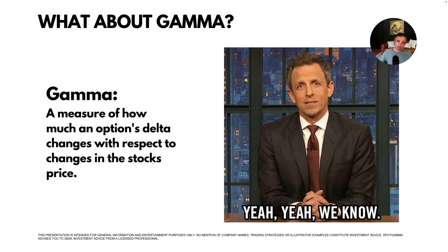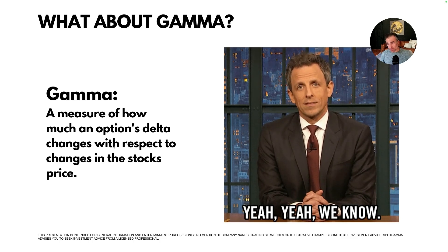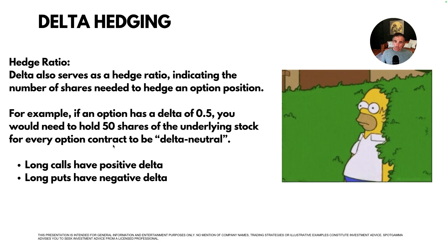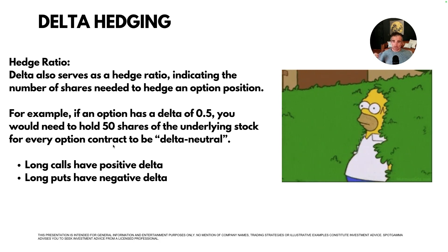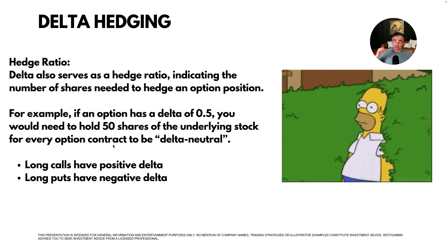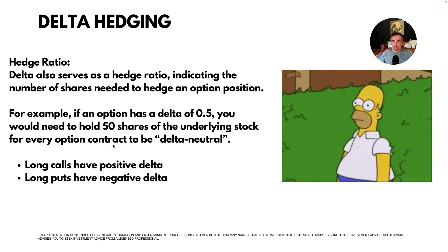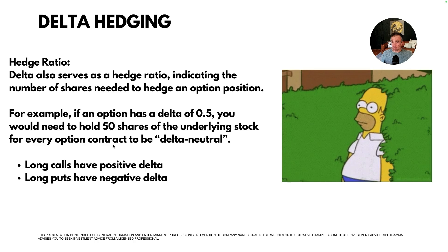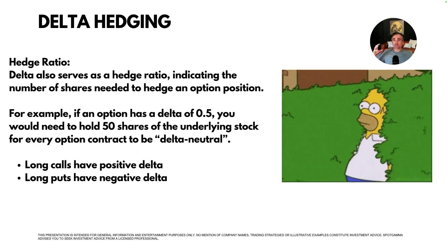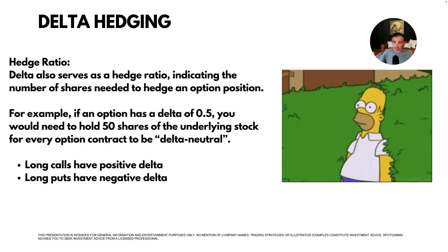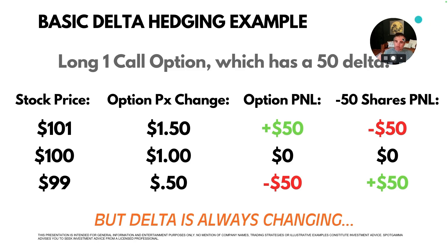We left out Gamma here. Gamma has been covered extensively across the internet — if you go to spotgamma.com and look up Gamma, there are excellent presentations on exactly what that Greek is. Just for complete coverage: Gamma measures how much Delta changes for the underlying stock's price change. The reason this matters to you, whether you trade options, stocks, or futures, is because of the concept of Delta hedging. We can use Delta as a hedge ratio.